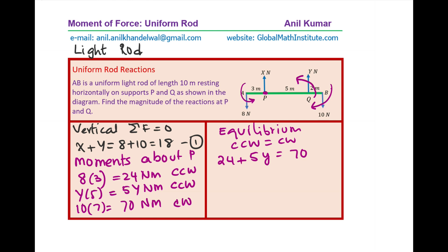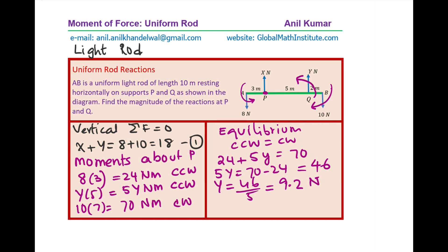Since it is in equilibrium, clockwise and counterclockwise moments are equal. So 24 plus 5Y equals 70. Therefore 5Y equals 70 minus 24, which is 46, and Y equals 46 divided by 5, which is 9.2 newtons. So X equals 18 minus 9.2, which gives us 8.8 newtons.